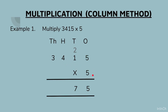Then we will move to the hundreds column. We will multiply 5 by 4 — 5 fours are 20. We write 2 at the top of the thousands column and 0 at the bottom of the hundreds column. Now we will multiply 5 by 3 — 5 threes are 15 — then add 2 to it.